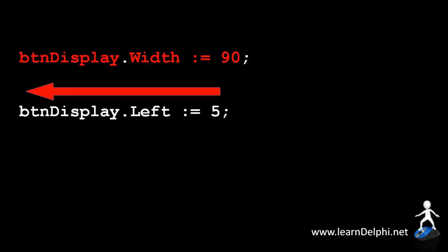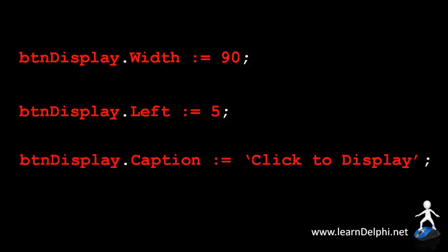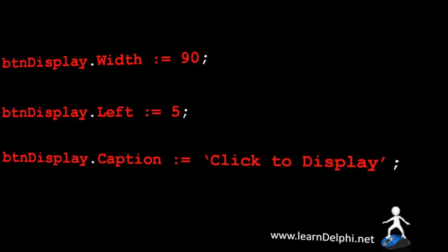Now, let's try it with this statement. Take the value 5 and assign it to the left property of btnDisplay. Okay, one more time with this statement. Take the value click to display and assign it to the caption property of btnDisplay. And that's how easy it is to read and write statements that change properties in runtime.